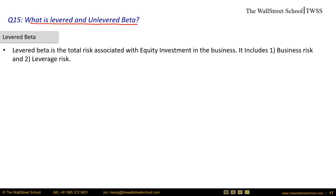Question 15: what is levered and unlevered beta? Levered beta measures the total risk associated with equity investment in a business. It includes two types of risk: business risk (related to the type of operations the company is in) and leverage risk (related to having debt in the capital structure). More debt magnifies the risk, increasing beta. Both risks together form the levered beta.